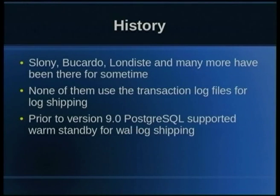Prior to version 9.0, Postgres used to support something using WAL logs. WAL — Write-Ahead Log — is the transaction log file in Postgres. Before 9.0, there was something called a warm standby server setup, but that was file-based shipping, not record-based shipping, so there was a little bit of lag between the primary server and the standby server. Also, with those warm standby server setups, you couldn't query the standby server — you could only use it as a failover setup. With 9.0, you can do record-based log shipping instead of waiting for a full 16-megabyte WAL file.